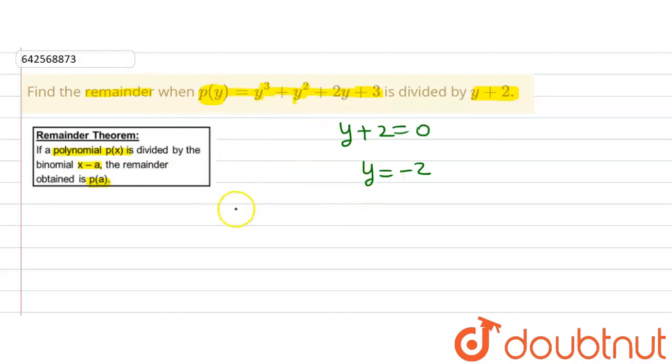So let's do it. Now we have P(y) = y³ + y² + 2y + 3.